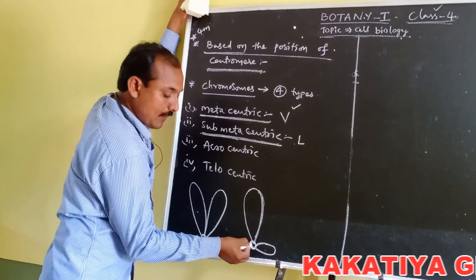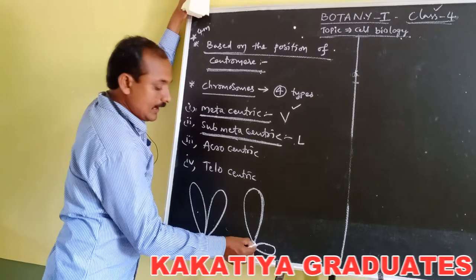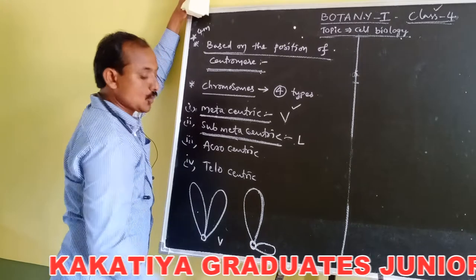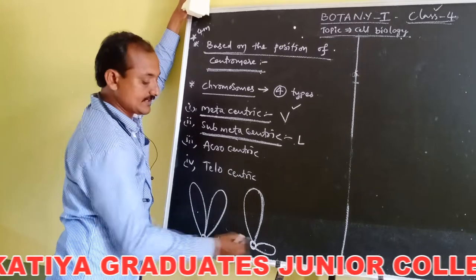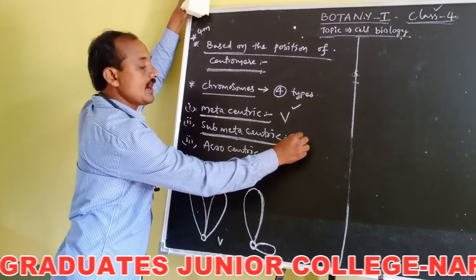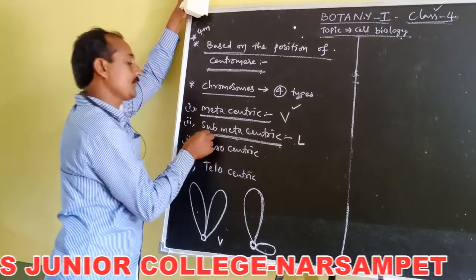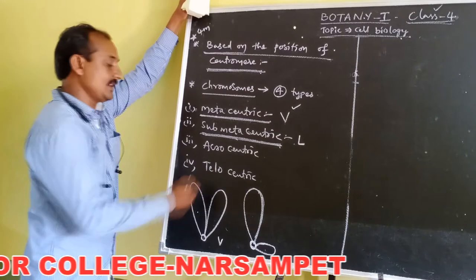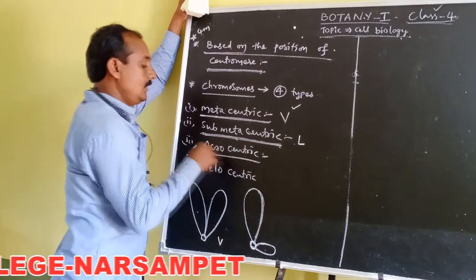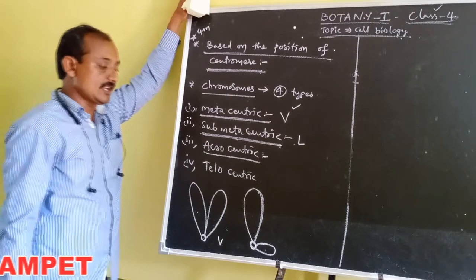Such type of chromosomes are called submetacentric chromosomes. Centromere is nearer to one arm and far away from the other arm, consisting of two unequal chromatids, appearing L-shaped during anaphase. Next, the third type is acrocentric.